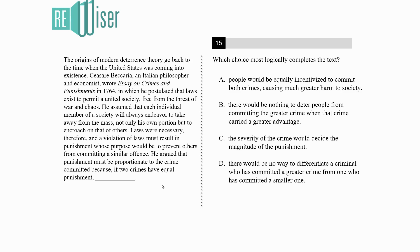He assumed that each individual member of a society will always endeavor to take away from the mass not only his own portion but also encroach on that of others. Laws were therefore necessary, and a violation of the laws must result in punishment whose purpose would be to prevent others from committing similar acts.